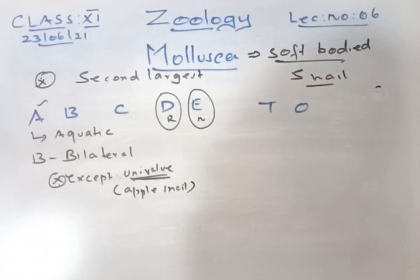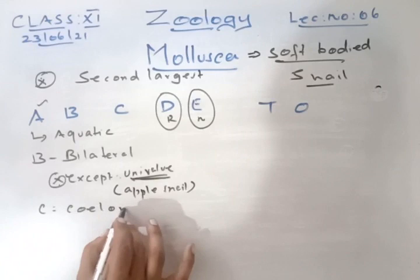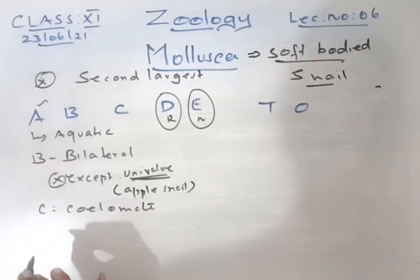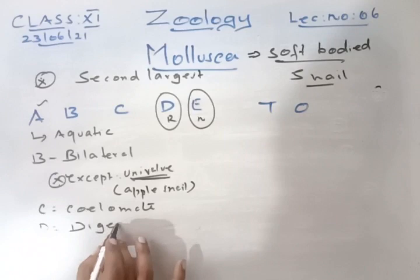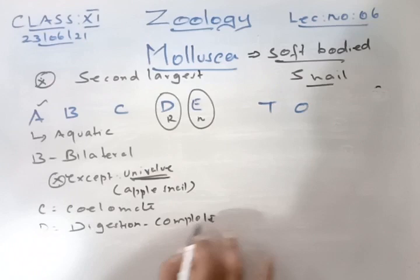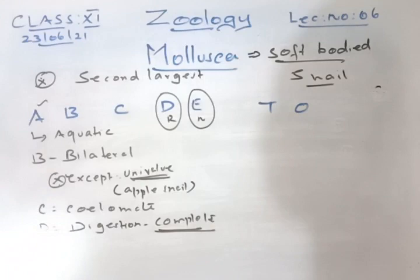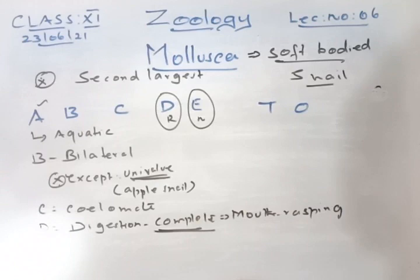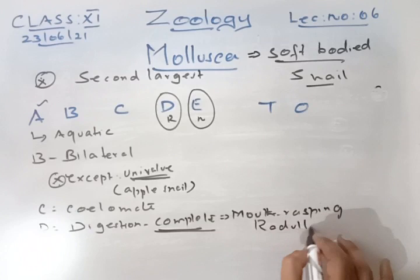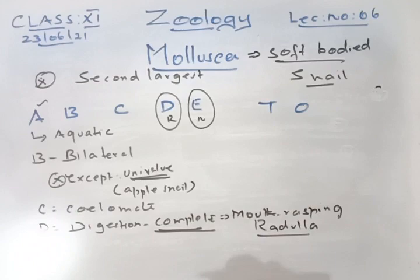C is for coelomate animals. D is for digestion — complete digestion. The mouth contains a rasping organ called the radula, which is like a teeth-like structure used for chewing. That is why D has an R added (DNR) to remember radula.